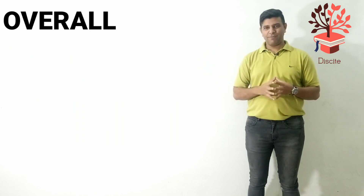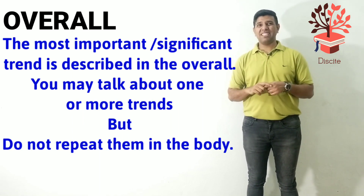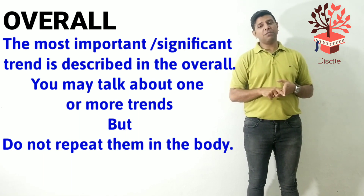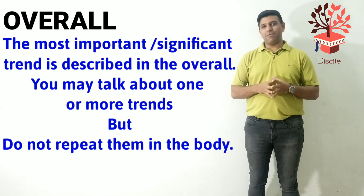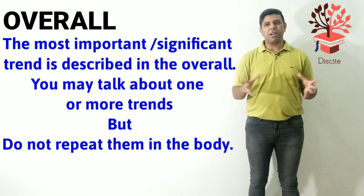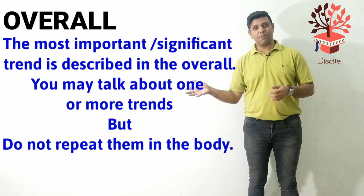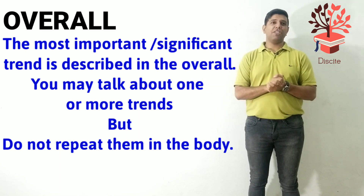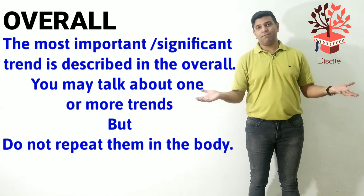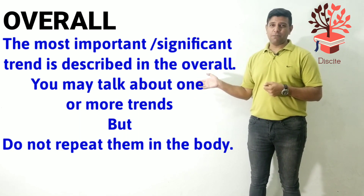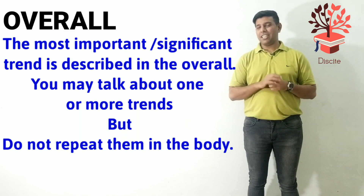Next is the overall paragraph. Overall, you talk about the most important thing. Here the most important things are food 24%, Asia 57%, and Europe 60%. But if you talk about all of them in the overall, what will we talk about in the body? So choose any one. You can say overall it can clearly be seen that the trend is mixed in all three pie charts and there's an uneven distribution. Or you can say overall the most important trend is that Asia has more than half of the population of the world. But then you don't have to repeat it in the body — no repetition in graph writing.